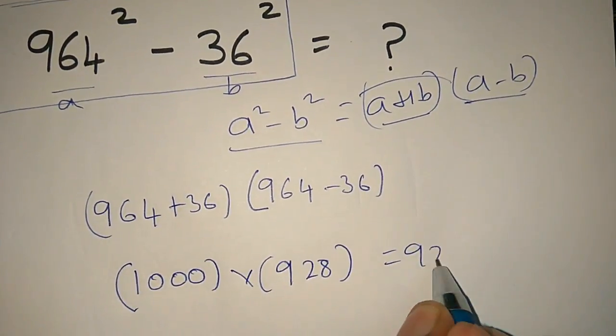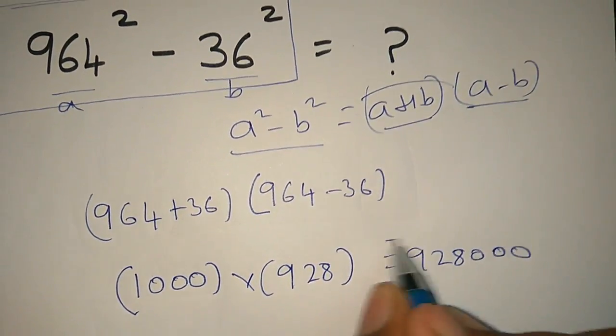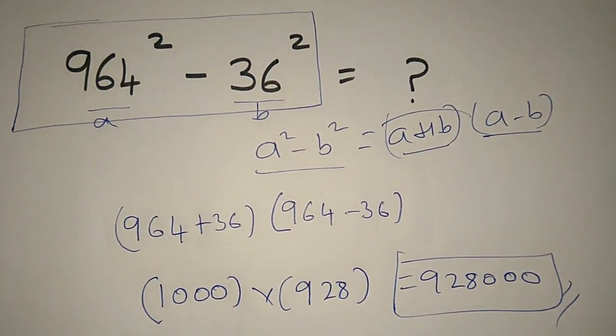So you multiply this. Add the zeros and this is the answer.